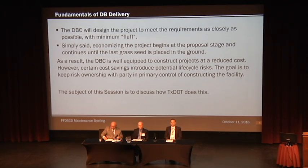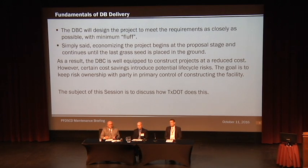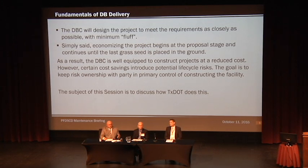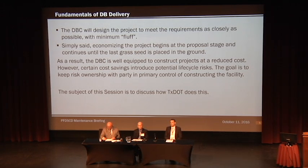The DBC will design the project to meet pretty much the contract requirements. He's not going to do any more — no extra fluff. He'll meet the contract, which is basically what we want. We just have to make sure that in our schematic we have what we want. Economizing the project begins at the proposal stage and continues all the way through design and construction. However, certain cost savings that the DBC implements could introduce some lifecycle risk costs. The goal in the DB delivery process is to make sure those risk costs stay where they should be, with the DB contractor accordingly.